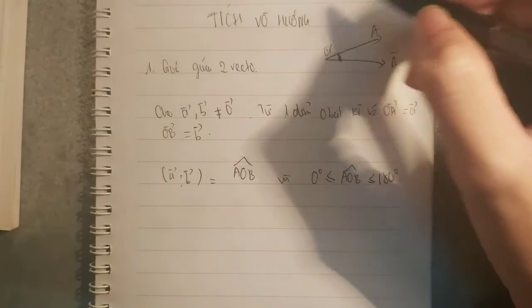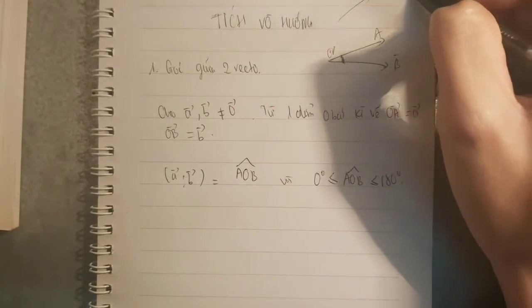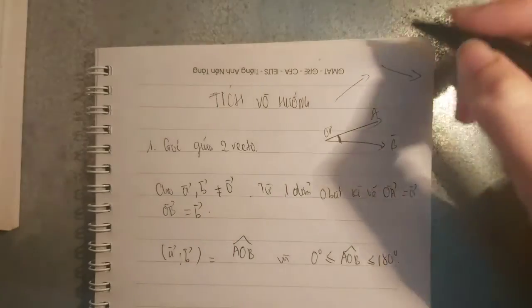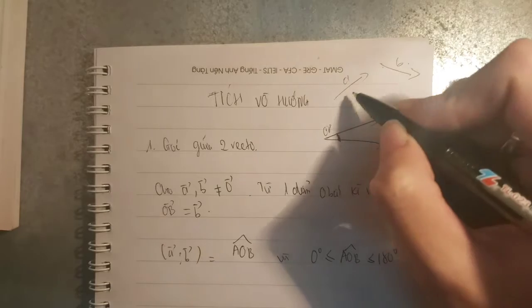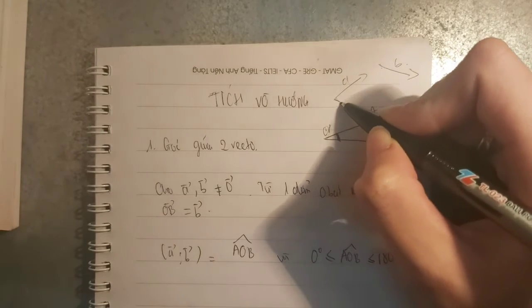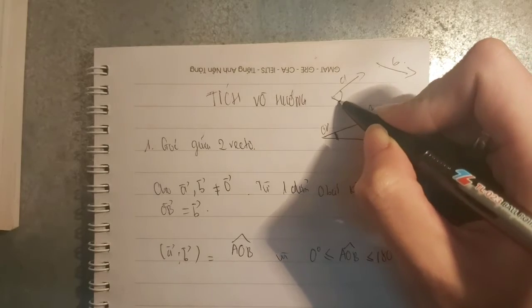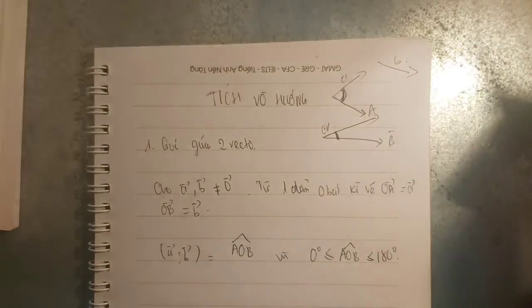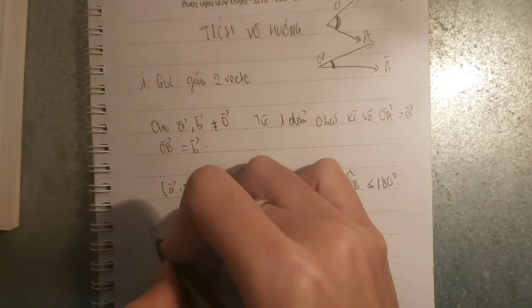Còn nếu nó không có chung góc này thì chúng ta phải làm như nào? Ví dụ như là hai vector linh tinh như này, vector A, vector B này. Thì chúng ta phải dịch chuyển, dịch vẽ lại với một vector cùng phương, cùng hướng với vector B, cho nó cùng góc vào đây. Và đây chính là góc tạo bởi. Đấy là phần chú ý.